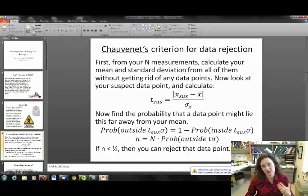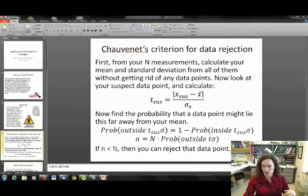Then, if little n is less than one half, then you can reject that data point. In other words, if it doesn't round up to one, that you should have at least one data point that's that far away, then you can reject.